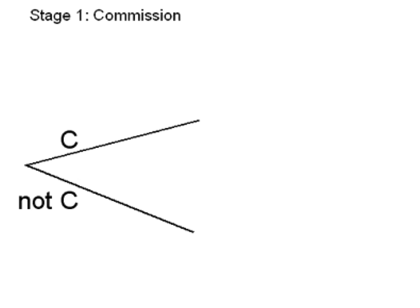The first branch off represents the first stage. The sales representative either gets the commission or does not get the commission. We are given that the probability of getting the commission is 0.4, and therefore by the complement rule, the probability of not getting the commission must be 0.6.